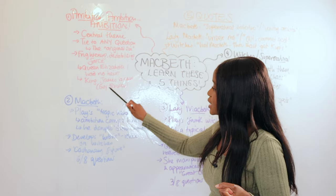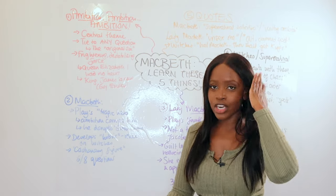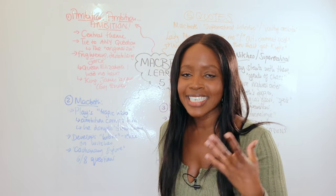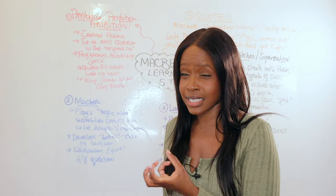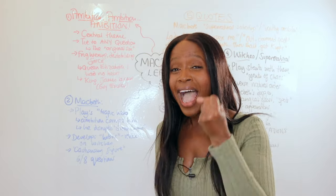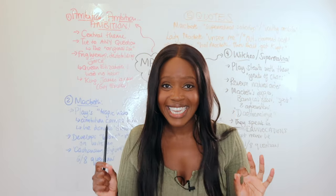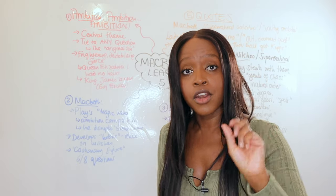Remember that this was also a time when Guy Fawkes tried to blow up the Houses of Parliament and kill the king. So ambition is a central theme, and once you take the time to understand this, you can literally answer any question on Macbeth. That's the first main point.